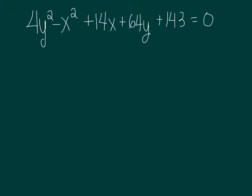Now we start this just like we've started all our other problems, so we're going to separate our x's and our y's and move our constants to the other side of the equal sign. I'm going to leave my y's first because it's the positive one, so the x squared is the negative, so I'm going to put that second. So I have 4y squared plus 64y, and then I'm going to leave my blank, and then I'm going to subtract x squared plus 14x plus blank, and that's going to equal negative 143.